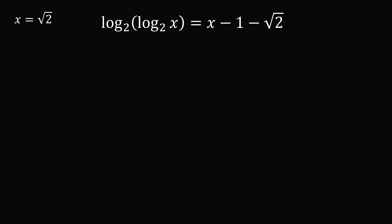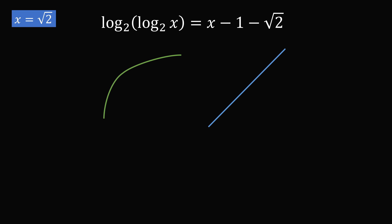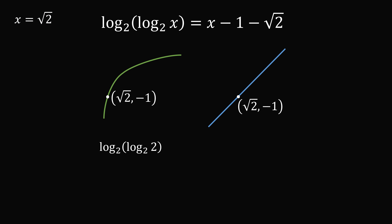Now let's think about this graphically. The expression x minus 1 minus square root of 2 is a linear equation, so it looks like a straight line. What about log base 2 of log base 2 of x? That's the logarithm of a logarithm — a concave down curve. We know x equals square root of 2 is a solution, so substituting into the right-hand side gives square root of 2 minus 1 minus square root of 2, which equals negative 1. So the point (square root of 2, negative 1) lies on both curves. Testing x equals 2: log base 2 of log base 2 of 2 equals log base 2 of 1, which equals 0. So the point (2, 0) is on the concave down curve.